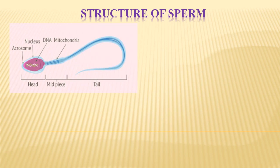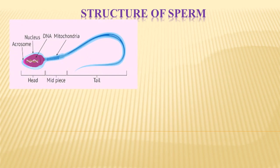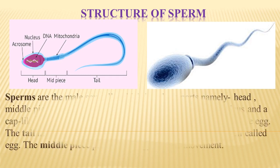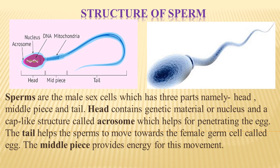The sperm is the male sex cell produced by the testis. The sperm has three important components: the head, the middle piece, and the tail. The head contains the genetic material in the form of DNA as well as the nucleus. It also contains a cap-like structure known as the acrosome, which helps in penetrating the egg. The tail helps the sperm move towards the female germ cell, and the middle piece provides energy for this movement as it contains mitochondria.